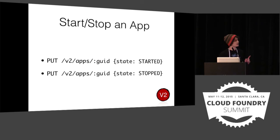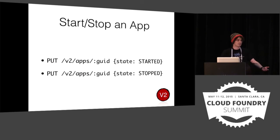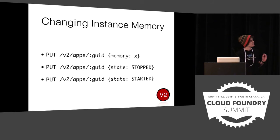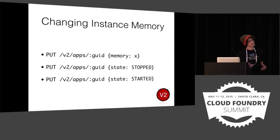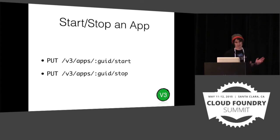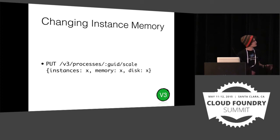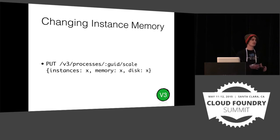In V2, to start an application you just update the state field to started or stopped — pretty simple. But consider scaling memory: you have to change the memory field to the value you want, and then also restart or restage your application. That hidden complexity in the V2 API makes it complicated for users. Our goal is to design a different way to interact with the API. In V3, you just call the start and stop endpoints off the app. For scaling, you just call the scale endpoint providing instances, memory, and disk. This endpoint handles the hidden complexity so you don't need to know the internals of Cloud Foundry.